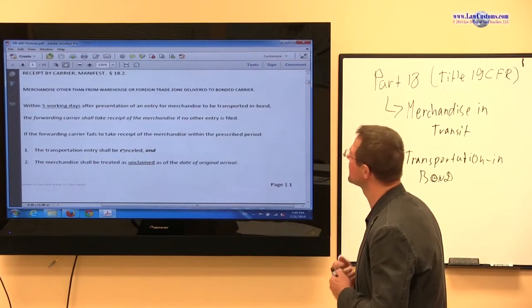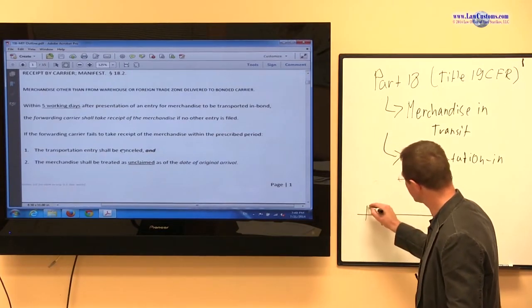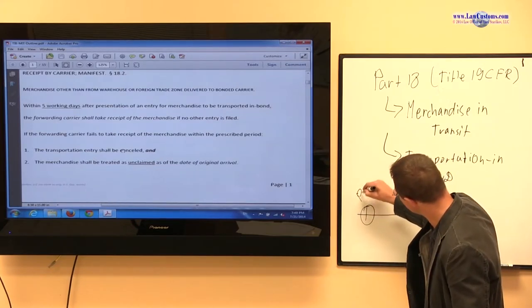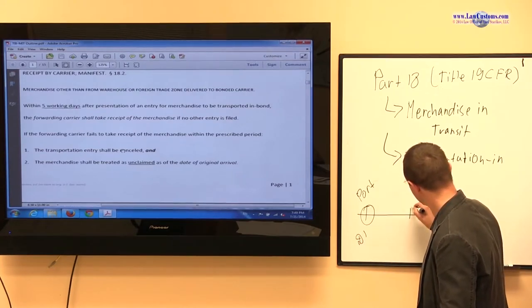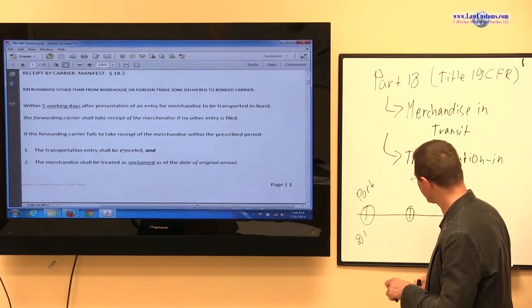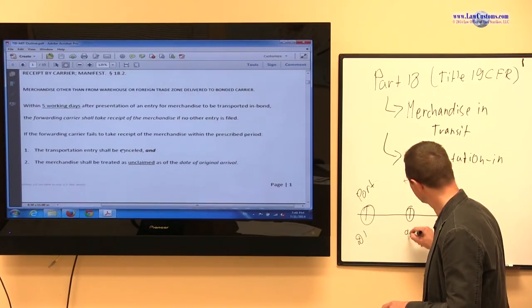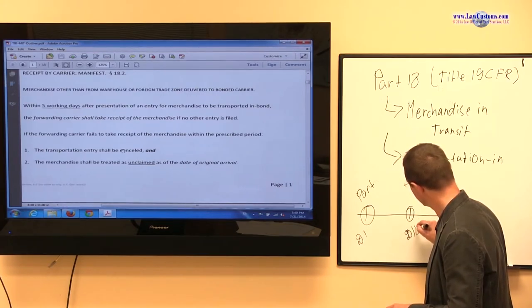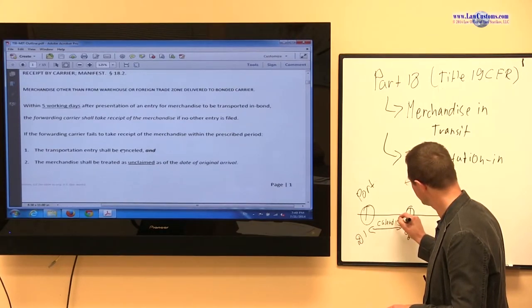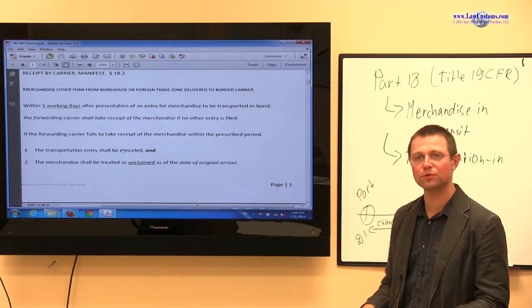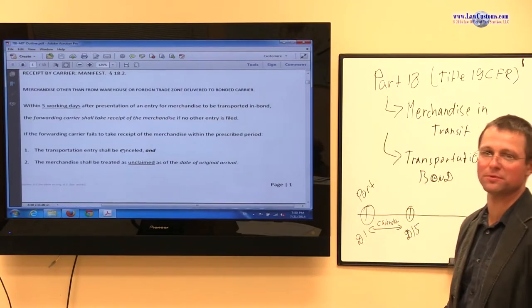Once the merchandise comes in, once it comes into the port, this is day one. How many days can it stay on the dock? Fifteen calendar days. If it stays beyond that, it goes to general order. How many days can it stay in the airport if it comes to the airport? Fifteen calendar days.